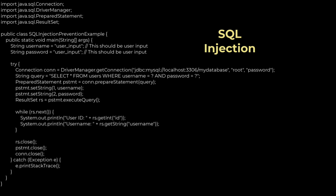Mitigating SQL injection attacks requires a combination of secure coding practices, input validation, and proper database management. One of the most effective ways to prevent SQL injection is to use parameterized queries and prepared statements — a Java example is shown here. These techniques ensure user input is treated as data rather than executable code, preventing attackers from injecting malicious SQL commands.